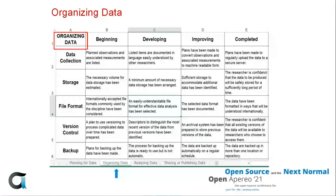In the organizing data rubric, the vertical columns represent the same steps toward completion. The horizontal rows include collecting the data, storing the data, creating formats for the files, version control of the data — meaning how the data changes over time — and backing up the data.